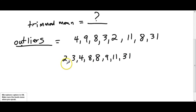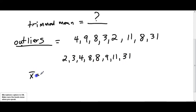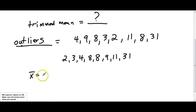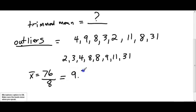You can see that the numbers are fairly close together from 2 up to 11, and then we've got this point that's completely out there — 31. If we calculate the mean, we add them all up and divide by 8. They all add up to 76, divided by 8, giving us a mean of 9.5. That is just the regular average.